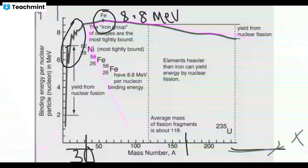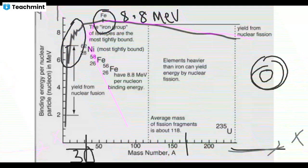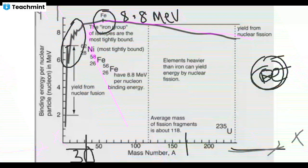Because iron is the most stable nucleon, this is the reason the core of the earth is filled with iron. The earth has three layers including the crust, and the core is predominantly iron because it is the most stable element in nature.